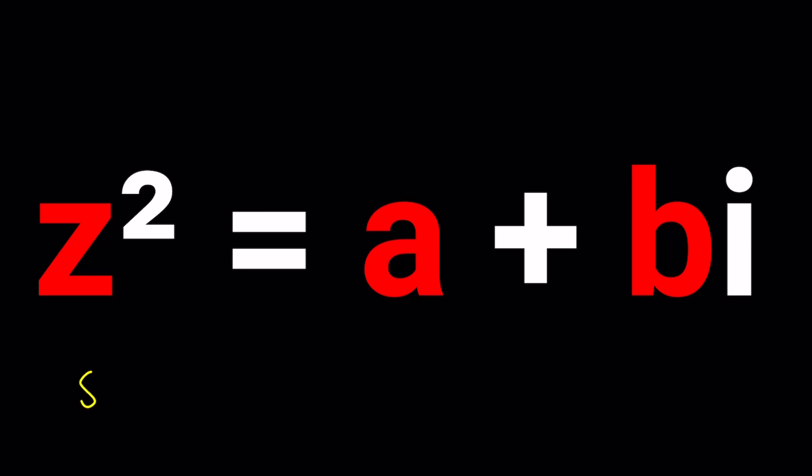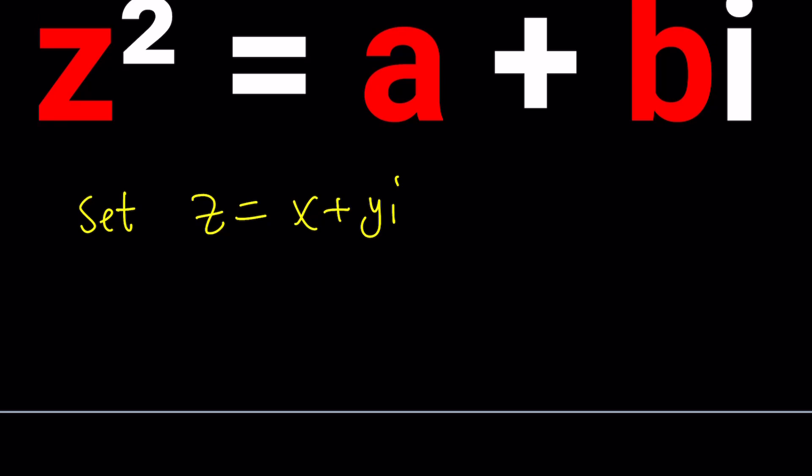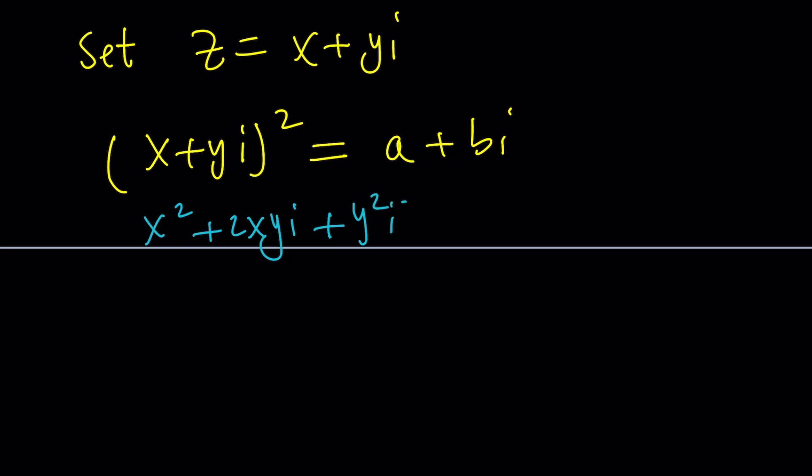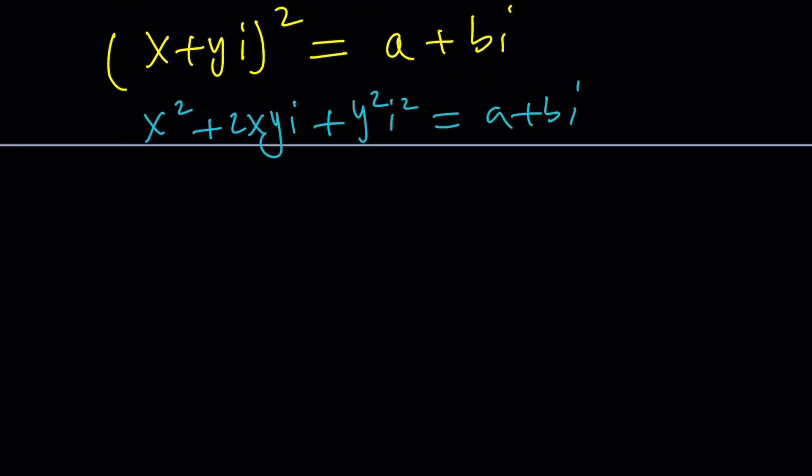I'm going to set z equal to x plus yi and then take z and square it. So z squared is supposed to equal a plus bi. Let's expand the left hand side and see what happens. x squared plus 2xy, plus y squared, i squared equals a plus bi. i squared is negative 1 so we can write it as x squared minus y squared plus 2xyi equals a plus bi.